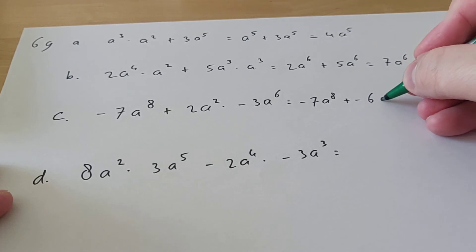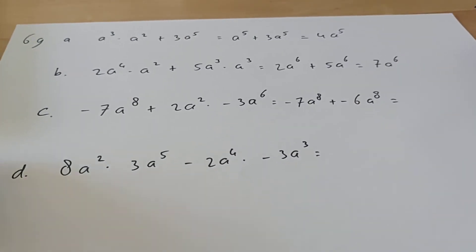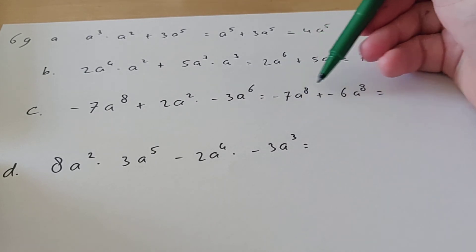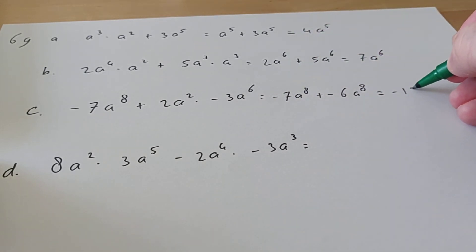And then you have 2 plus 6 is 8, so a^8. Well, the powers are the same, so now we can just add them. And minus 7 minus 6 is minus 13a^8.